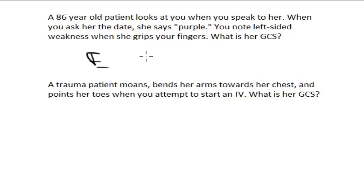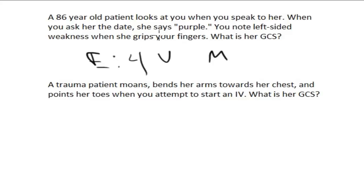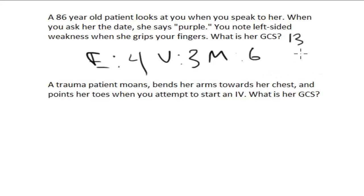An 86-year-old patient looks at you as you speak to her. When you ask her the date, she replies 'purple.' You note left-sided weakness when she grips your fingers. What is her GCS? First, eye opening: she looks at you as you walk in — that's spontaneous and normal, worth four points. When you ask her the date, she says 'purple' — that is an inappropriate response, worth three points. You note left-sided weakness when she grips your fingers — that is following commands, worth six points. So six plus three plus four is thirteen. Her GCS is thirteen, but a better answer is E4, V3, M6, which tells us where she lost those two points from a perfect fifteen.